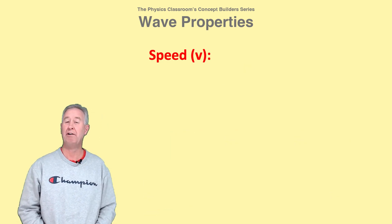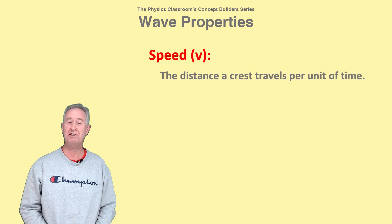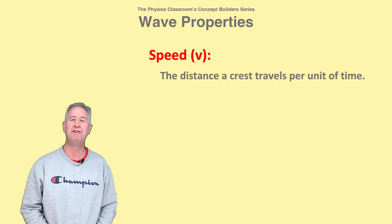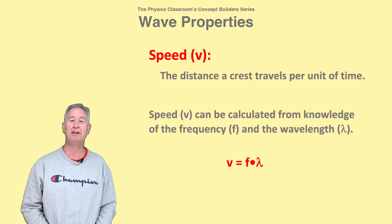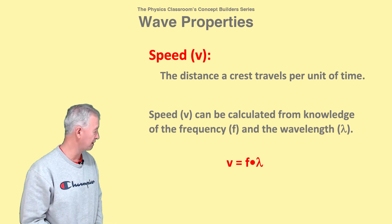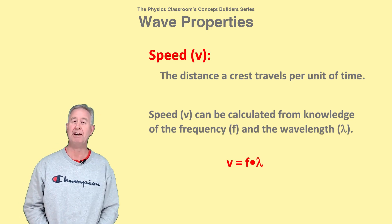The speed of a wave refers to how fast it moves. It is the distance a crest travels per unit of time. Speed can be calculated from knowledge of the frequency and the wavelength using the equation v equals f times lambda.